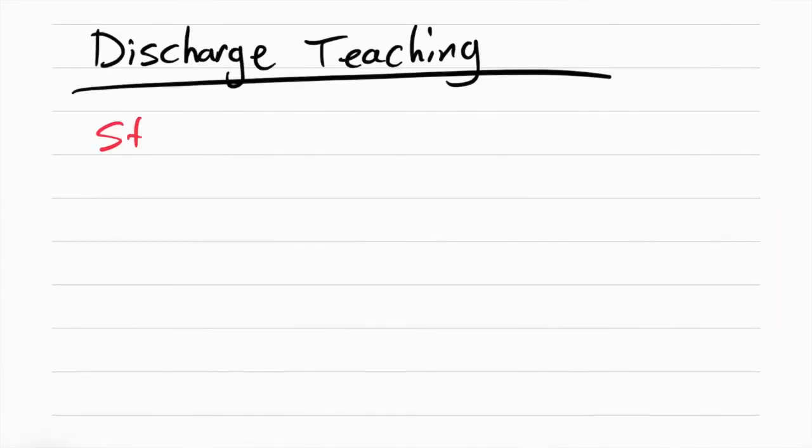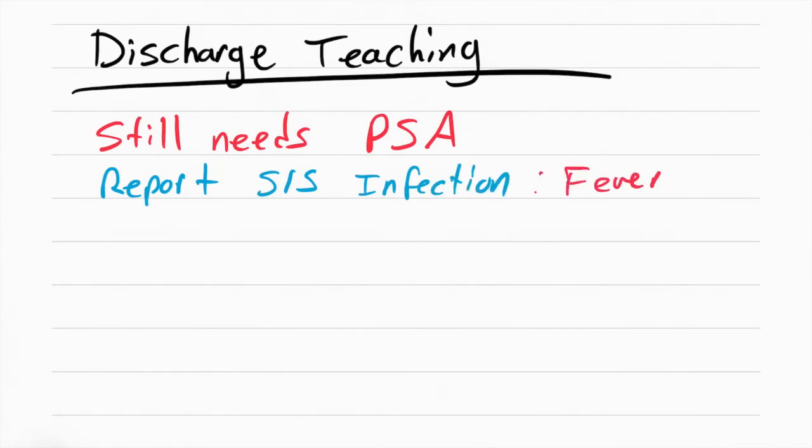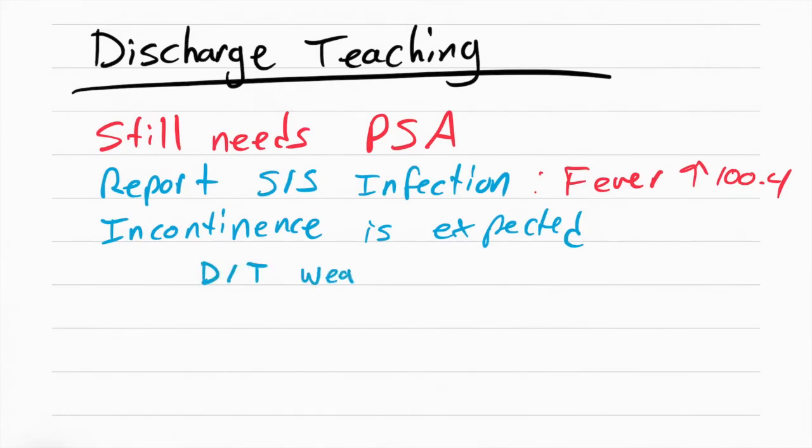For discharge teaching, the patient still needs to get a PSA done to check for prostate cancer. They need to report any signs and symptoms of infection because the foley was in there. The main sign of infection to report is a fever, which is any temperature above 100.4. Then the patient should also know that they should expect incontinence. This is because of a weak sphincter that's caused by the big foley being inside while it's being irrigated.